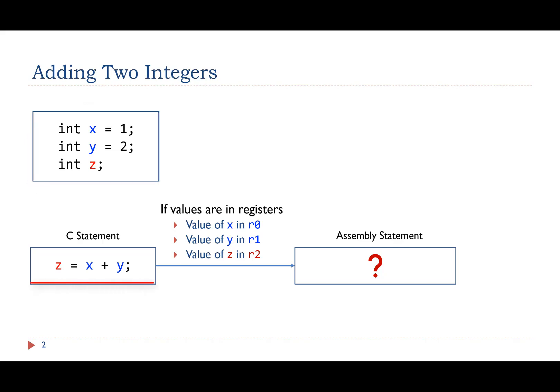This C statement calculates the sum of x and y and saves the result in z. Assume the value of x, y, and z is in registers R0, R1, and R2, respectively.